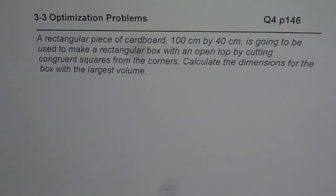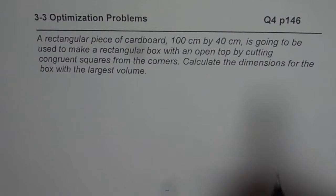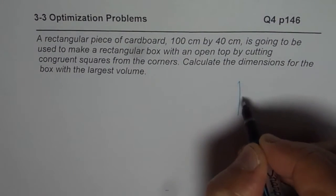I'm Al Kumar and here is the solution of question number 4, page 146, Nelson, chapter 3.3, Optimization. A rectangular piece of cardboard, 100 cm by 40 cm, is going to be used to make a rectangular box with an open top by cutting congruent squares from the corners. Calculate the dimensions for the box with the largest volume. So let's make a sketch representing the situation.